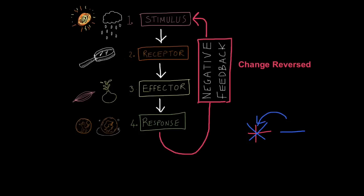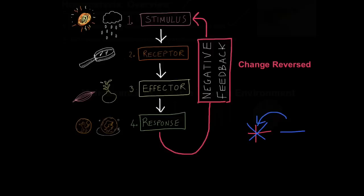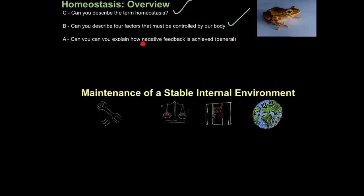In other tutorials you'll learn specific examples of negative feedback. Just to review one more time, the stimulus is the change in the internal environment. The receptor is the part of the body that detects that change. An effector will either be a muscle or gland which does something to start reversing that change and the response is the actual reversal of the change. And that brings about negative feedback. And that is explaining how negative feedback is achieved in our body.